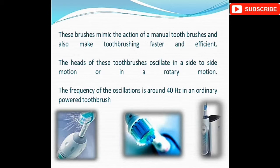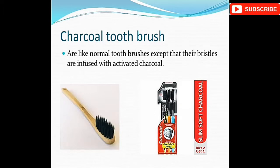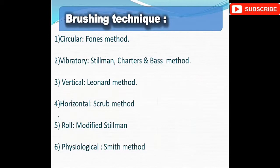The frequency of oscillation in an ordinary powered toothbrush is around 40 hertz. Recent advances in power toothbrushes include rotating, counter-rotational, Rota-Dent, side-to-side oscillating, rotating interplak, Sonicare, and Oral-B Vitality models. Charcoal toothbrushes are like normal toothbrushes except that the bristles are infused with activated charcoal, helping to restore the oral cavity to its ideal condition.